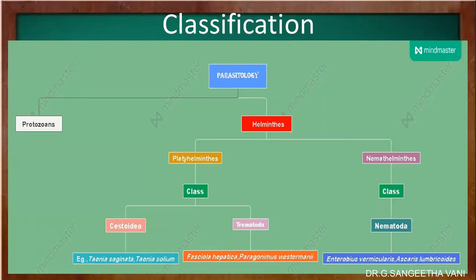Under cestoids, Taenia saginata, Taenia solium, Echinococcus granulosus, etc. will come under this group. In trematodes, Fasciola hepatica, Fasciolopsis buski, Paragonimus westermani, and so on.